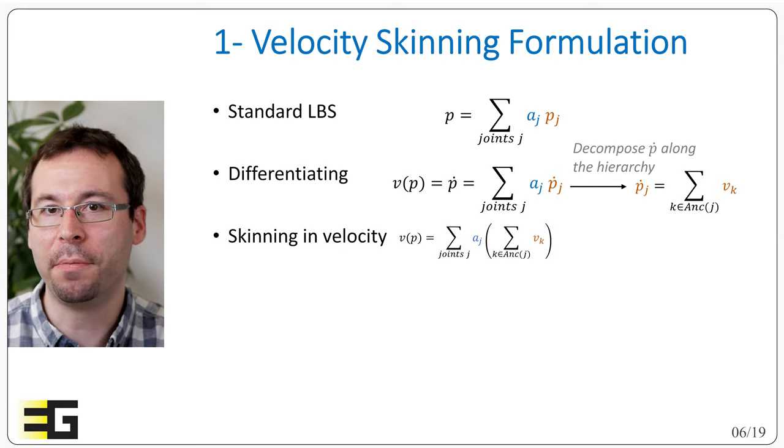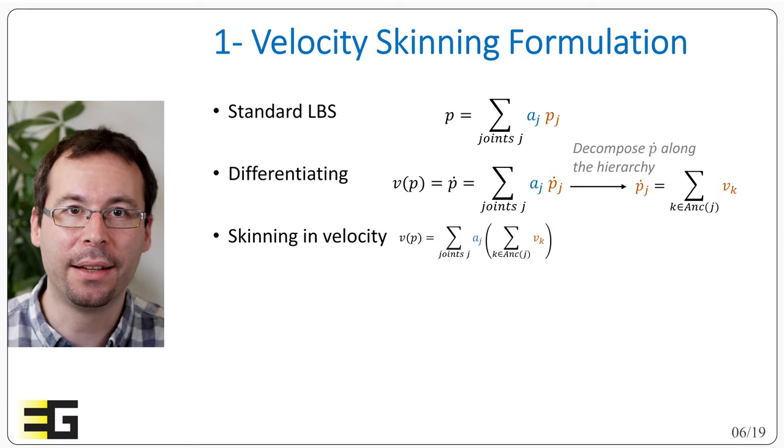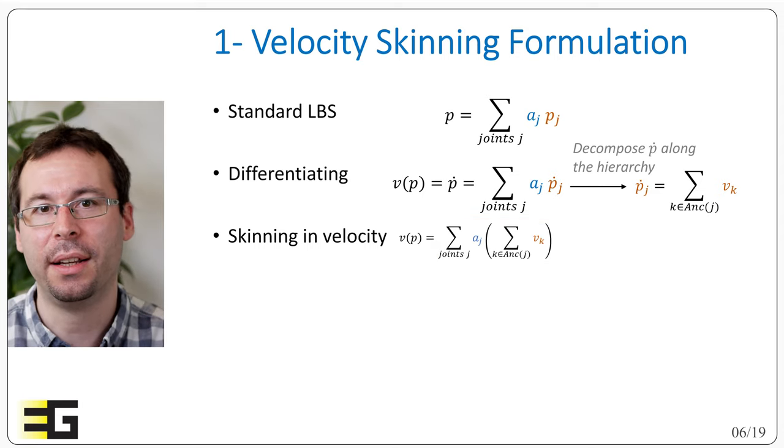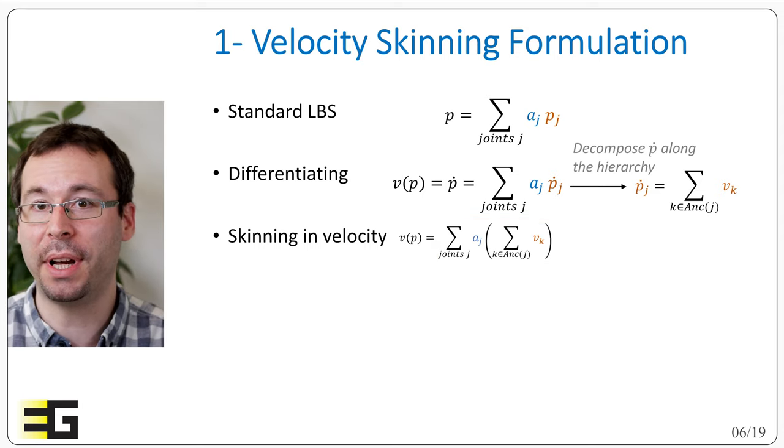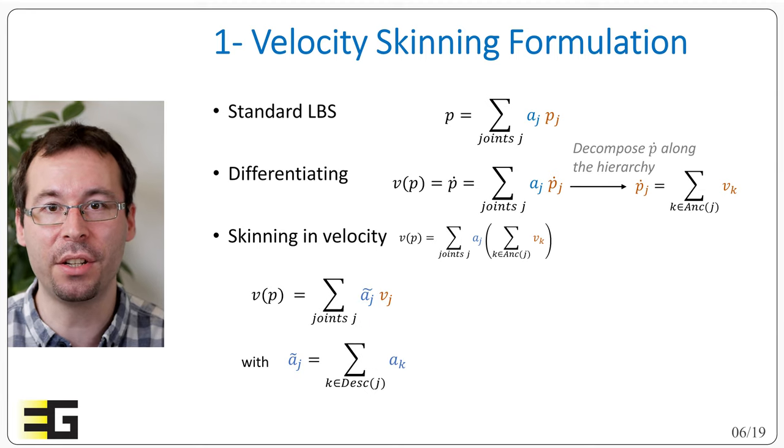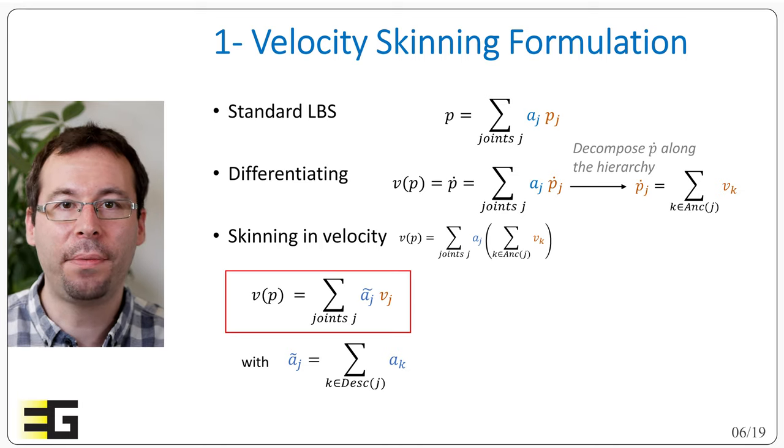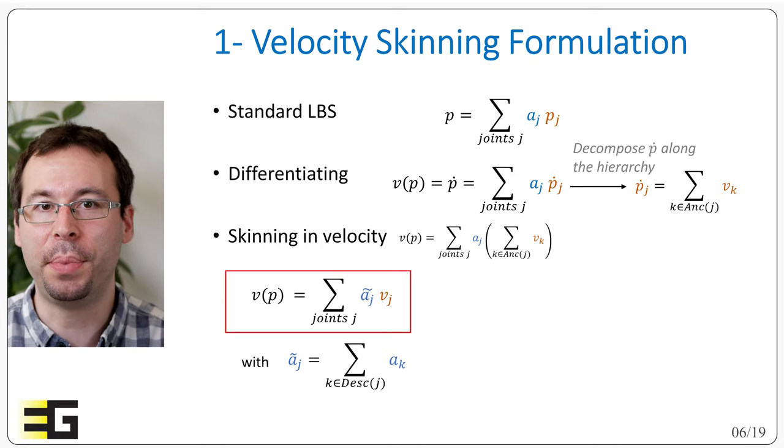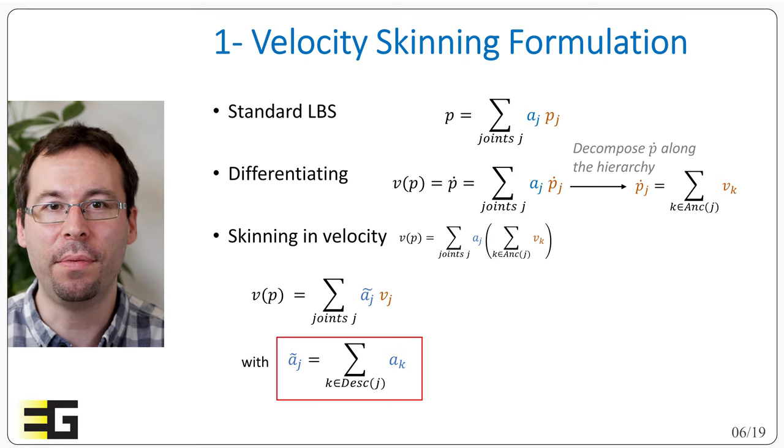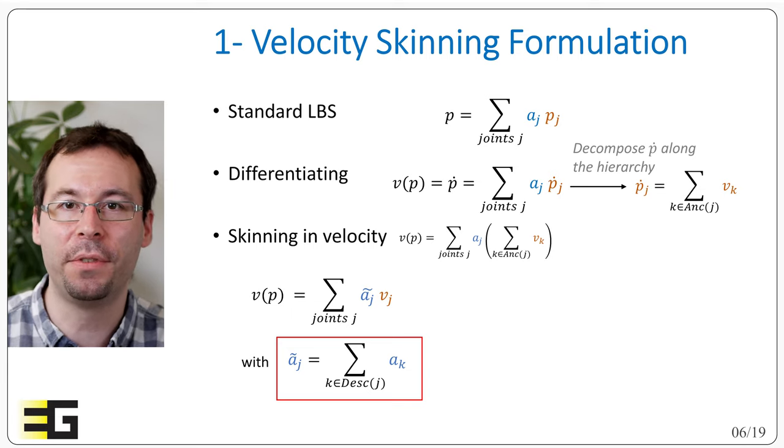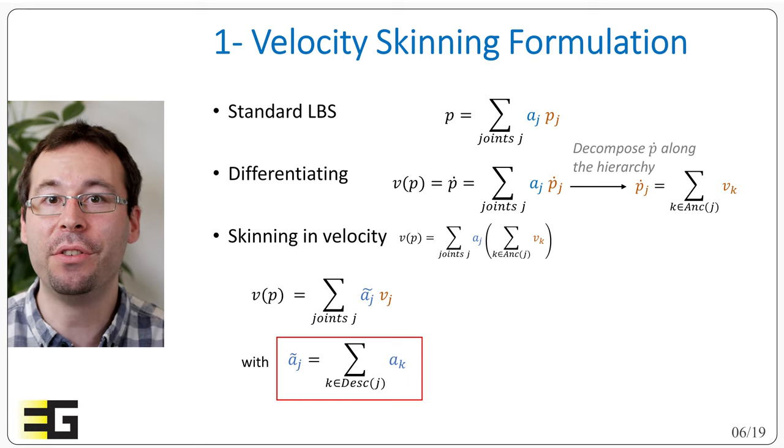Now that we have the decomposition of p_j, we can plug it back to the relation of the skinning. So this now looks like a double summation, but actually we are counting several times the same joint in descending along the hierarchy. So actually we can perform a change of variable and we can adapt the relation to appear as a single sum. Note that the details are provided in the appendix of the article. And finally we end up with the following relation. v of p is equal to the sum of some weights a_j tilde times the v_j, with a_j tilde equal to the sum of a_k with k being the descendant of joint j. And we call them the velocity skinning weights.